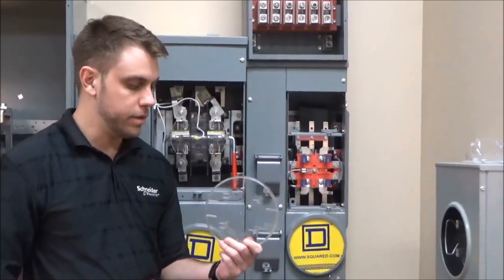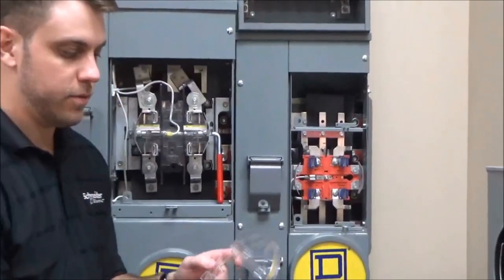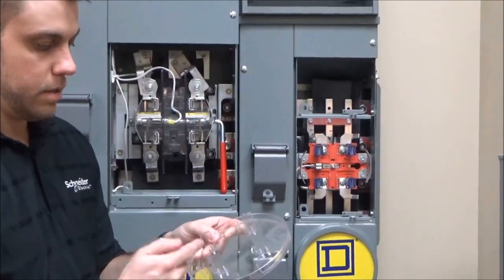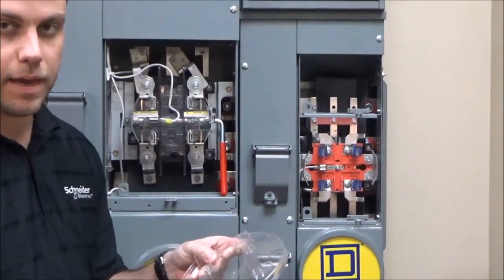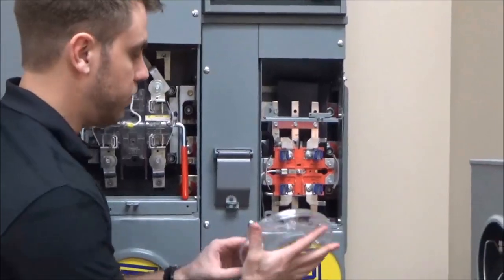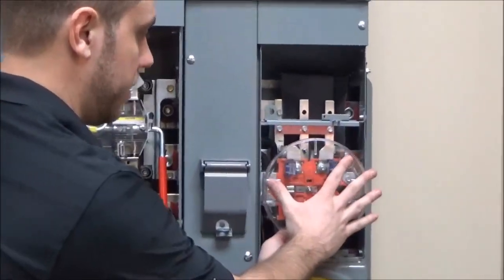To install the Lexan meter cover, it has four clips or stabs on the back that you'll push into the four jaws of the meter socket.